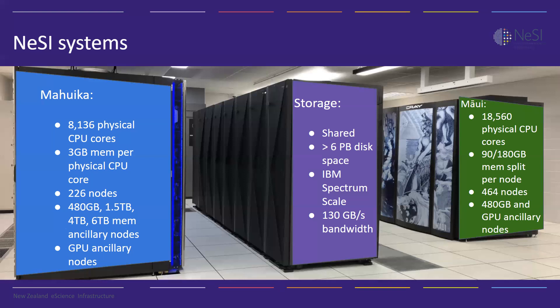In addition to the standard nodes, there are some non-standard nodes which have 480 gigabytes of memory, which are quite new at the time of this recording. One of the major reasons most projects will end up on Mahuika is because Mahuika also has fewer restrictions than Maui. On Mahuika, you're able to submit jobs of pretty much any type — serial jobs, multi-CPU jobs spread across multiple nodes, or full-node jobs up to hundreds of CPUs and terabytes of memory, as well as running jobs for up to three weeks.